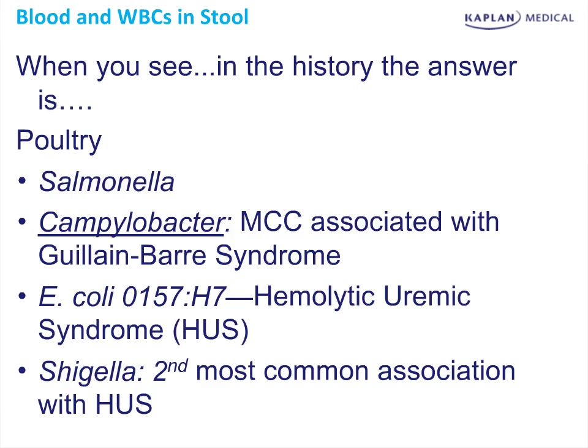These associations are important, but they're not as important as the question: is there blood or white cells in the stool? Blood or white cells — either one or both — helps you identify Salmonella, Shigella, Yersinia, febrile, and parahemolyticus. The individual presentation is more important than the history of what you ate.